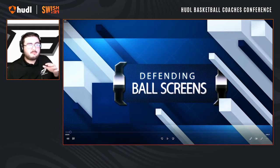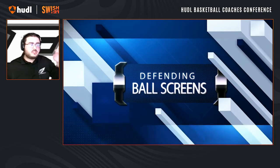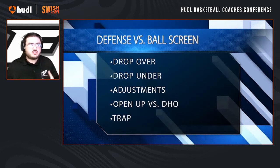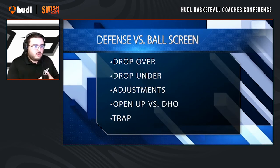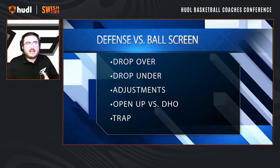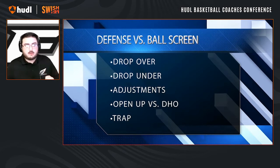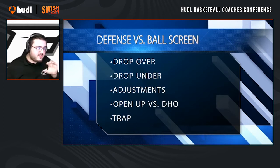We're going to go through some basic coverages: drop over, drop under, some adjustments, then we'll talk about open up versus dribble handoff, and then the trap. The way we call our stuff is everybody involved is going to have a call — drop is the guy guarding the screener, over/under is what the guy guarding the ball handler does, and open up versus drop applies to the dribble handoff.